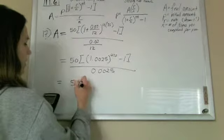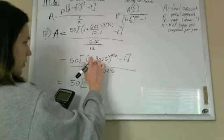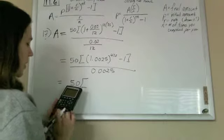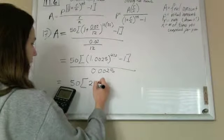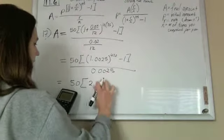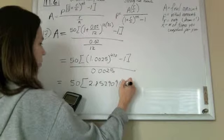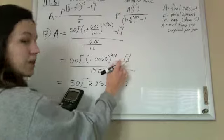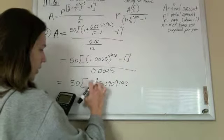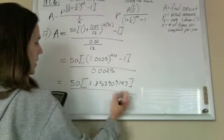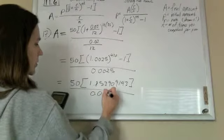I'm going to do 1.0025 raised to the 420, and I get 2.853909143. But remember, I want to subtract 1, so instead of saying 2 point, I'm going to say 1, and divided by 0.0025.